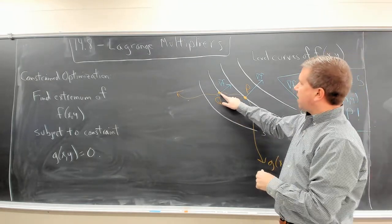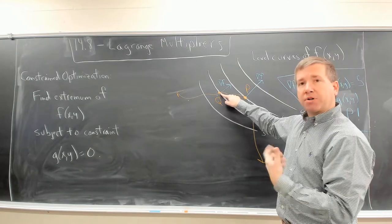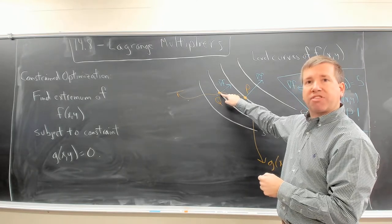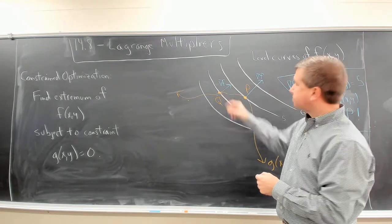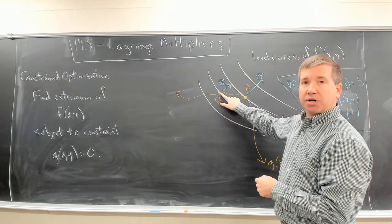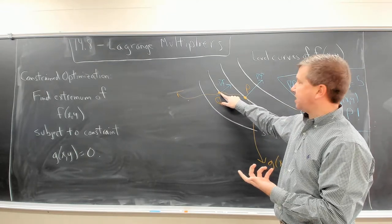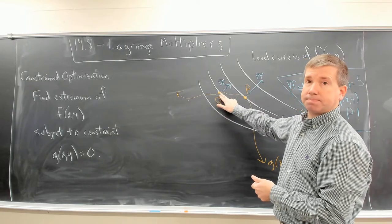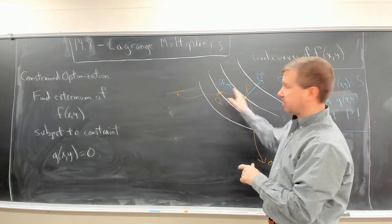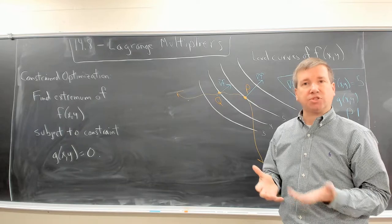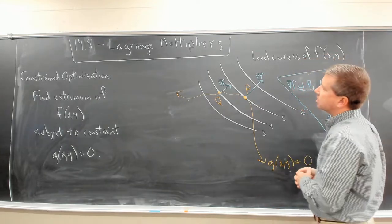I've also graphed the gradient here of f. Remember, the gradient is always orthogonal to a level curve. Observe that we couldn't follow the gradient here because that would take us off of the orange curve. And we need to stay on the orange curve. So basically,